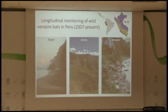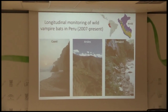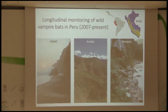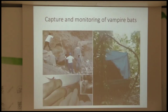When I started out during my PhD, I really wanted to ask: does culling actually work to reduce rabies transmission? The way we set about doing that was to start a long-term monitoring study. At the moment, we're working on points across Peru covering the coast, the Andean valleys in the center of the country, and the Amazon rainforest. In each of these habitat types we have multiple sites.